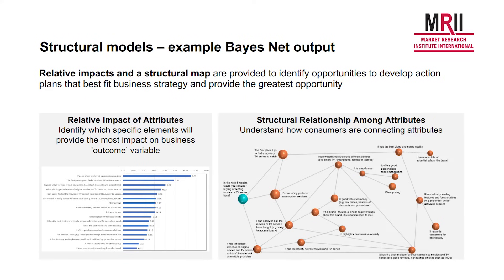Let's have a closer look at BayesNet. What you see here is two outputs. The first is relative impact — so importance on the left-hand side — for all of the attributes we put into the model. That's what we get from a standard key drivers analysis. Typically, rather than having impact scores that sum to 100%, we tend to show them in terms of the actual improvement we get on our outcome variable for a one-point improvement on any of the attributes.